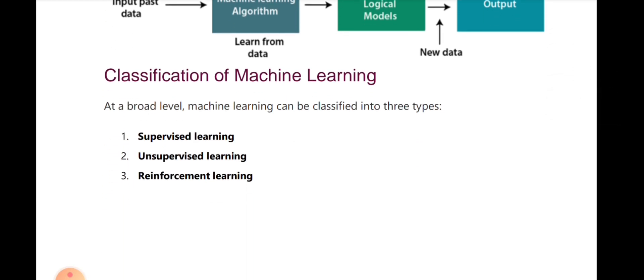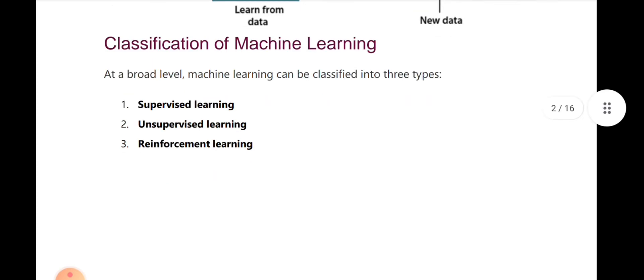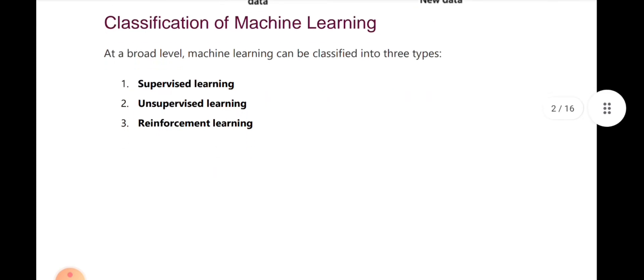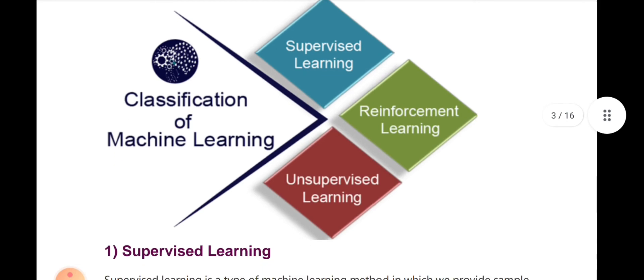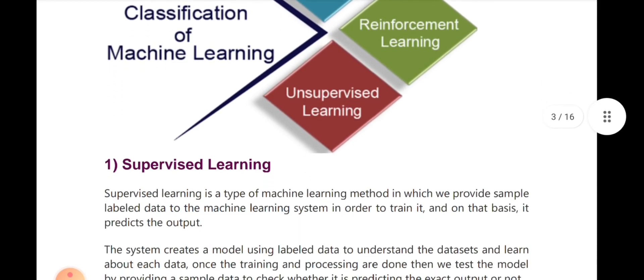The classification of ML has three main types of learning: 1) Supervised learning, 2) Unsupervised learning, and 3) Reinforcement learning. What is supervised learning? In supervised learning, we are the supervisor.